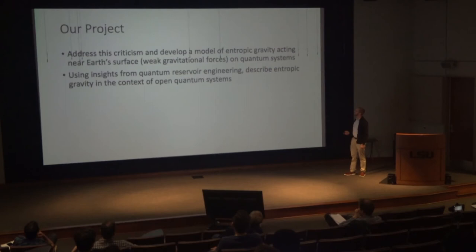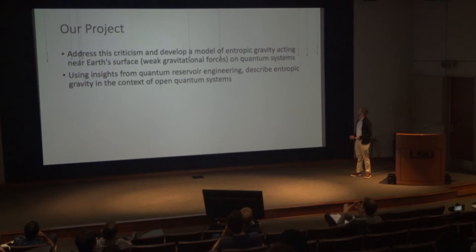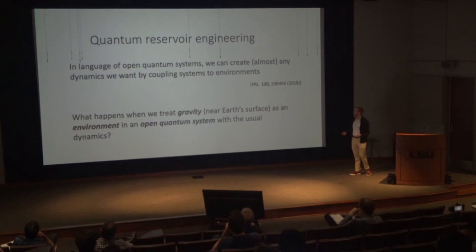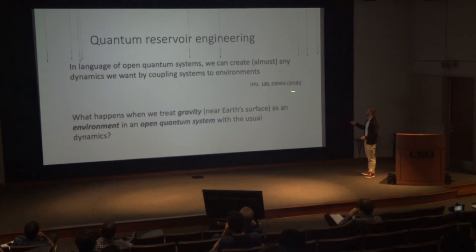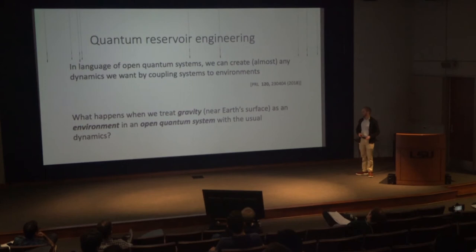For our project, we've taken this criticism very seriously and asked: can we actually make a model of entropic gravity acting near the Earth's surface and see what happens? Using insights from quantum reservoir engineering, we hope to describe entropic gravity in the context of open quantum systems. The results of quantum reservoir engineering show that we can, in the language of open quantum systems, create almost any dynamics we want for a quantum system by coupling it to environments. In our situation, we can employ this to ask: what if we treat gravity as just such an environment — that is, we treat gravity near Earth's surface as an environment in an open quantum system with its usual dynamics?